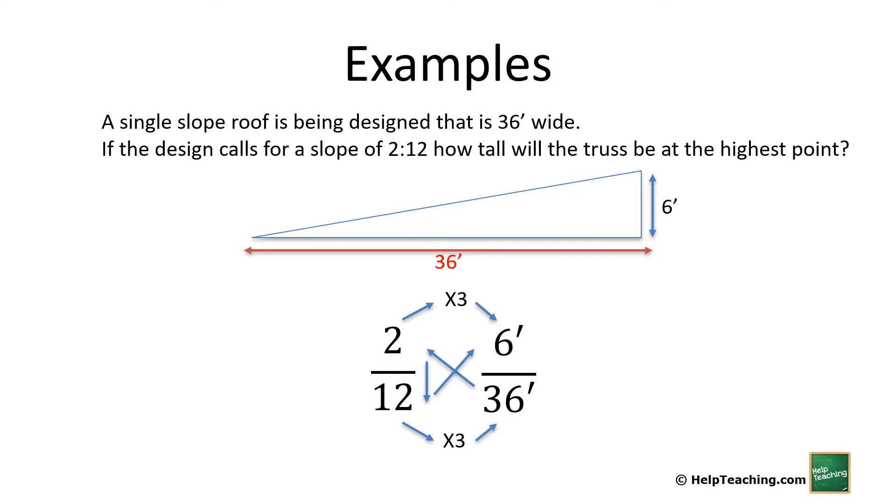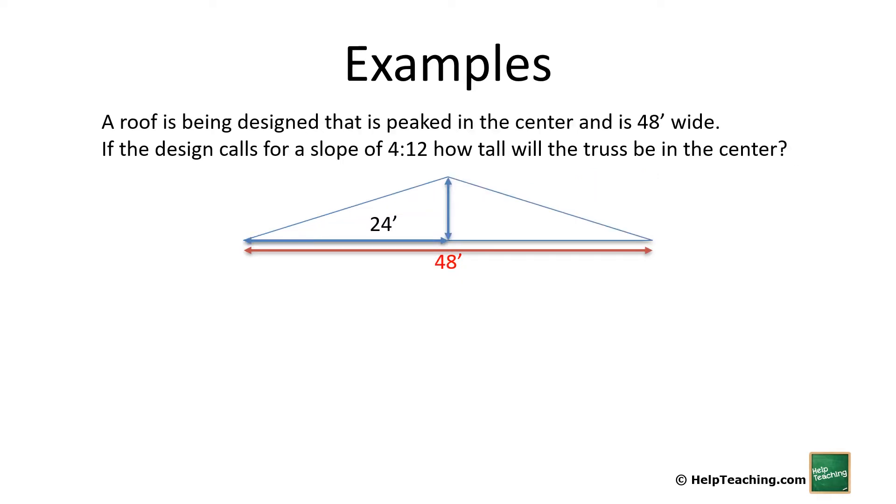In this example a roof is being designed that is peaked in the center and is 48 feet wide. If the design calls for a slope that is 4:12, how tall will the truss be in the center? So we need to break this down into a right triangle which means dividing our span in half to get under the peak of the roof. So we'll use 24 foot span for our reference here. So let's go: 4:12 is going to be our reference ratio and x/24 will be our real-life measurements. Again, cross multiply and divide: 24 times 4 divided by 12 gives us 8 feet. So it would be 8 feet tall in the center.